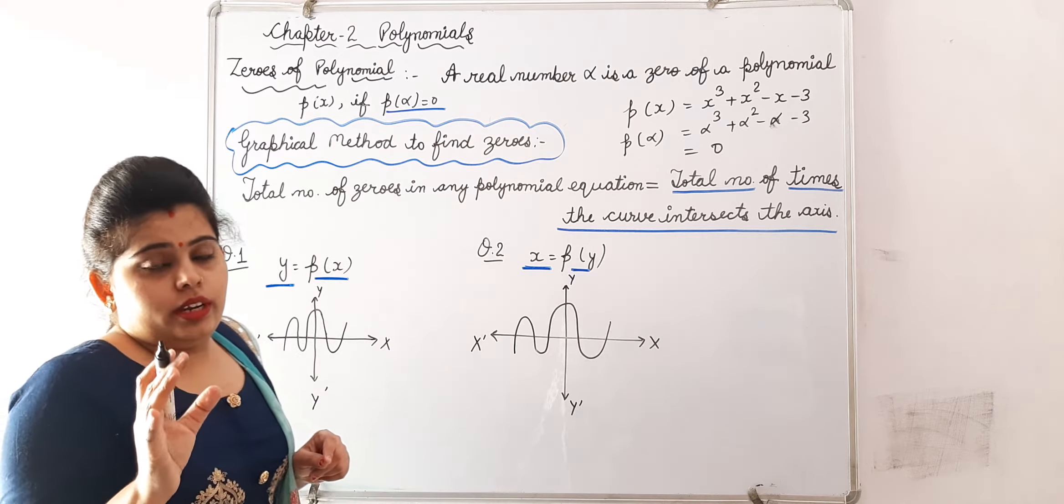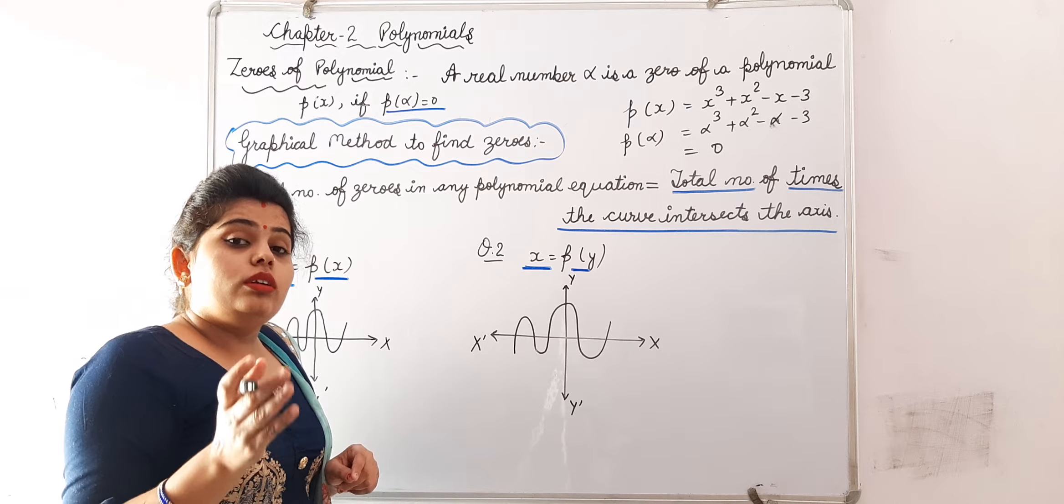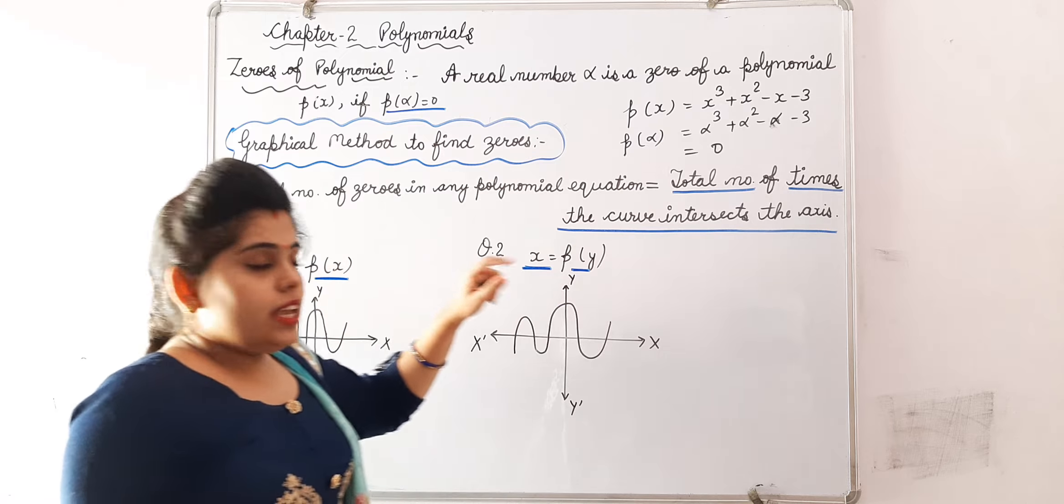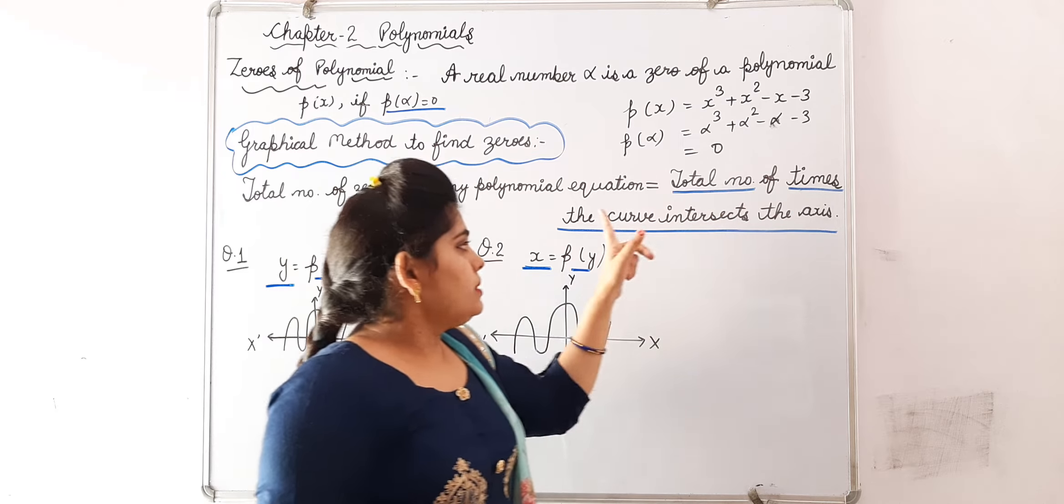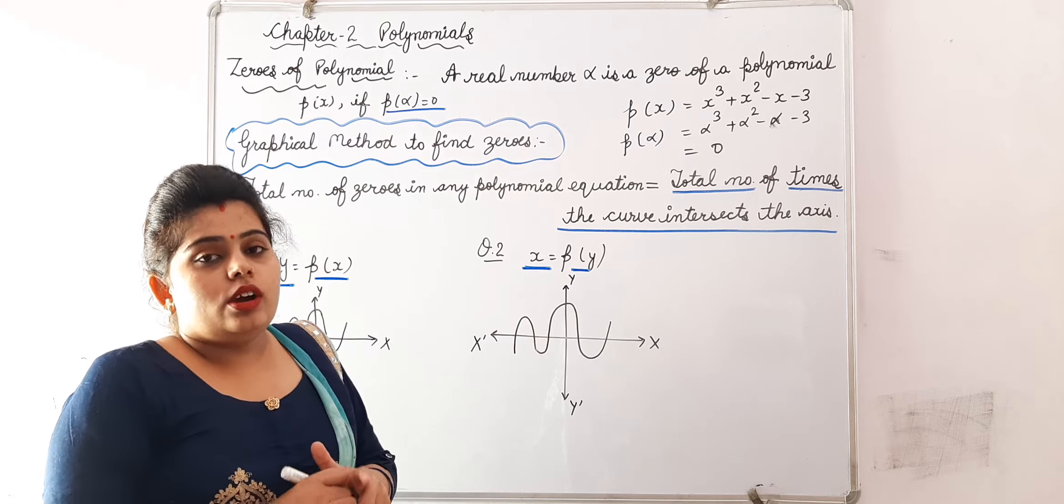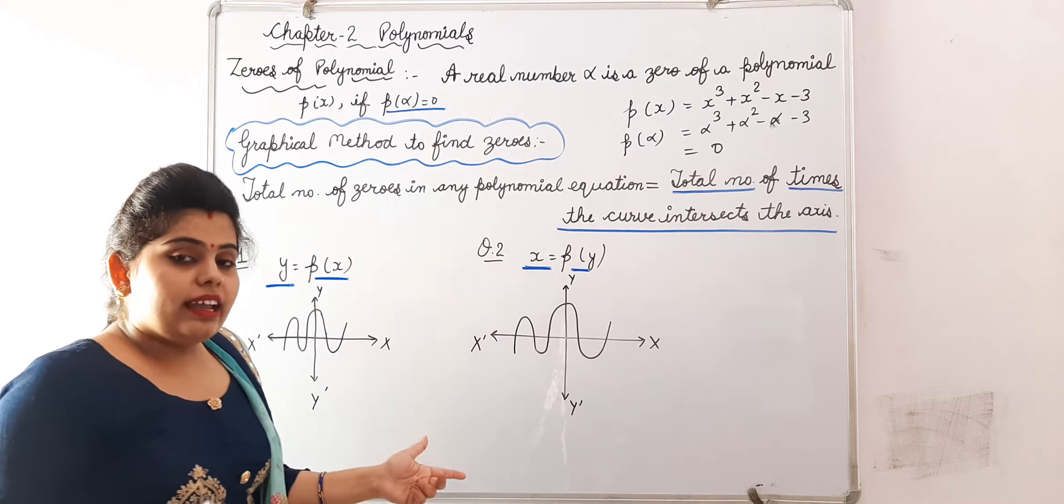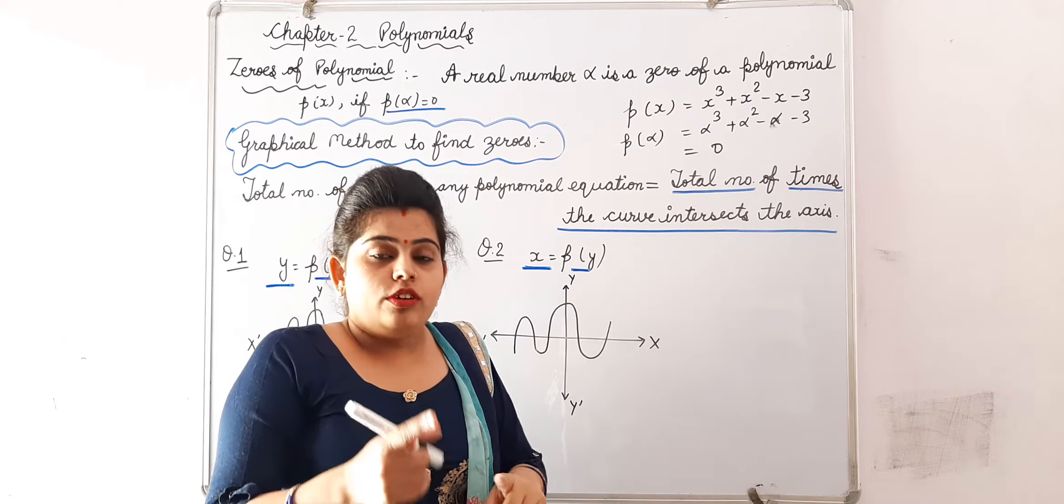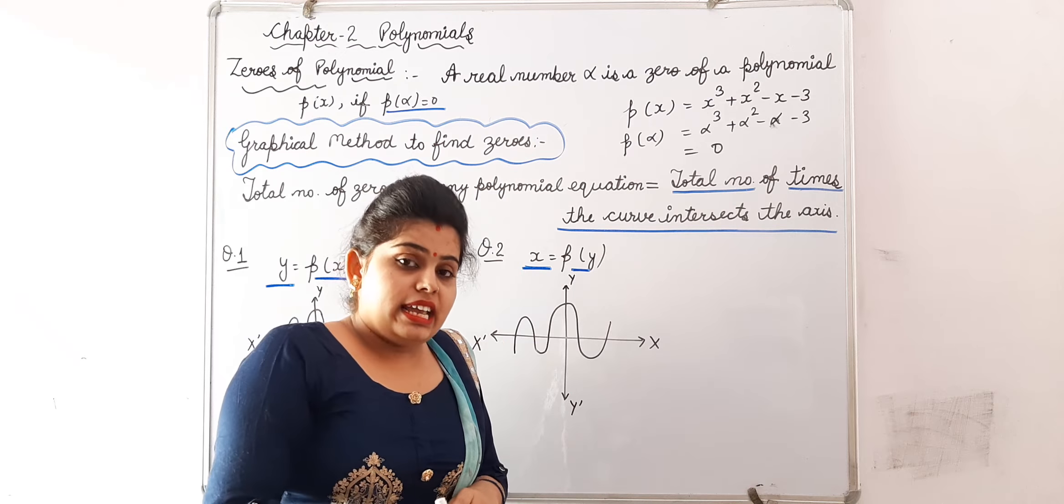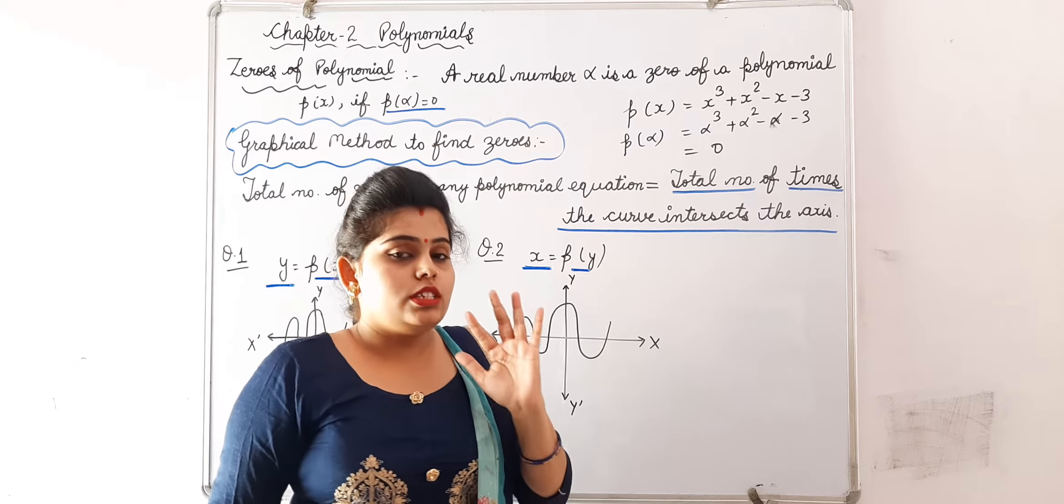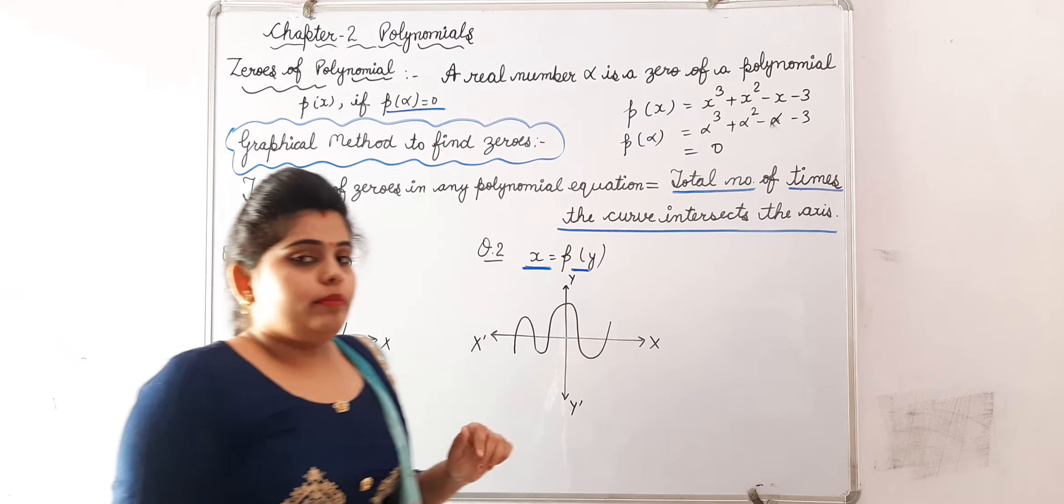And we need to find out number of zeros in it. Then zeros will be equal to total number of times the curve intersects the axis. According to whichever equation is given to you, I will explain this with help of example, that how many times that curve will intersect the given axis, that many will be its number of zeros. Let's take one example.